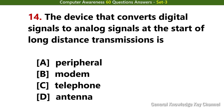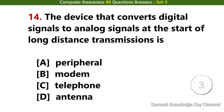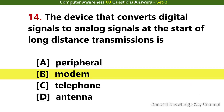The device that converts digital signal to analog signals at the start of long distance transmission is? Answer option B: Modem.